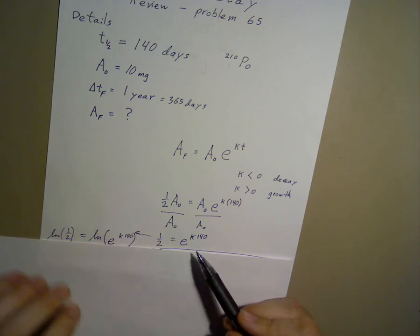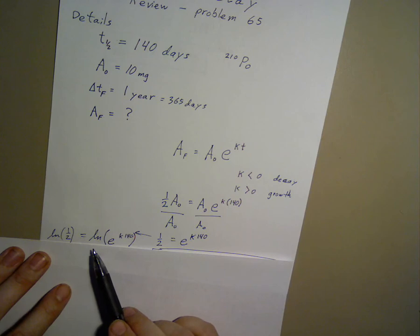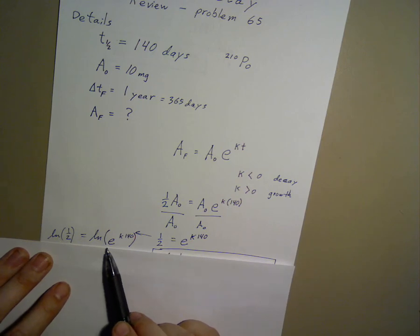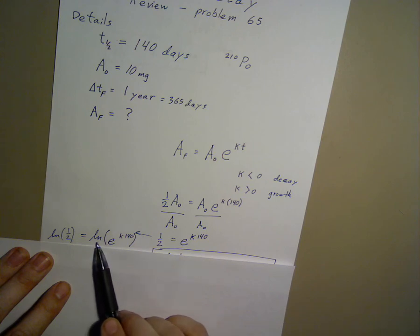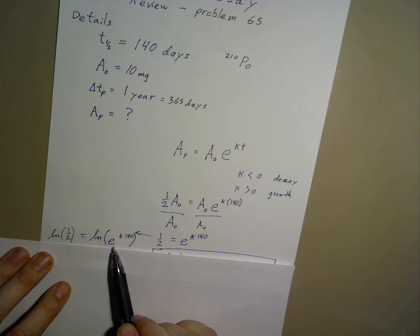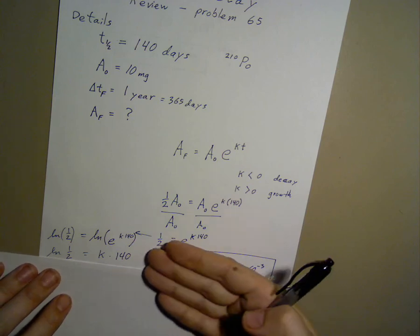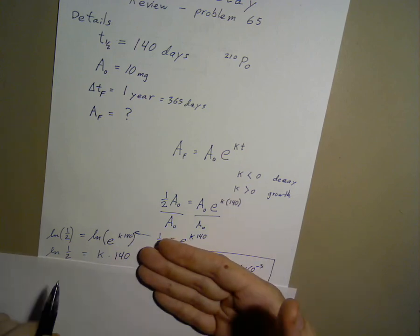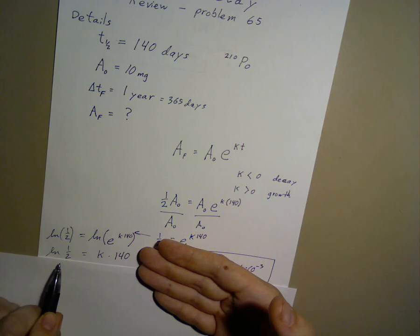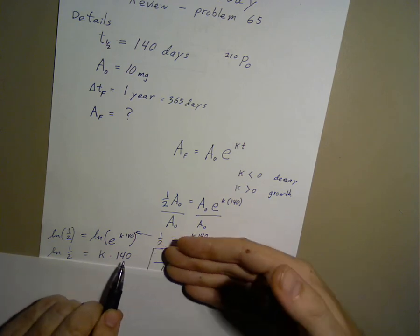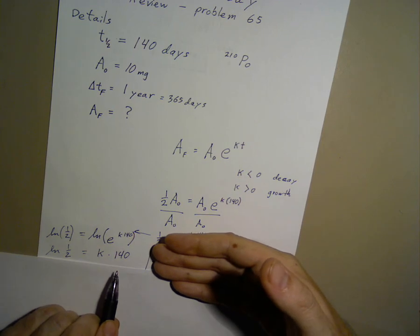If I next take the logarithm of both sides, then we can simplify the right side, because the logarithm and the exponential are inverse functions of each other. That means each one undoes the other. So natural logarithm of one-half equals k times 140.